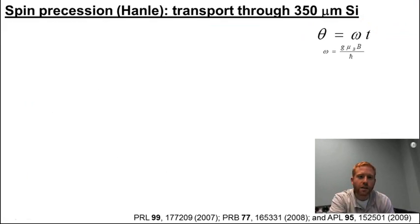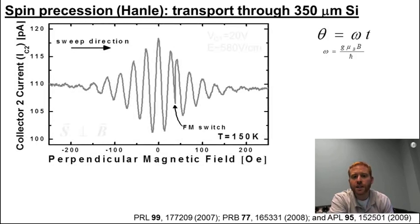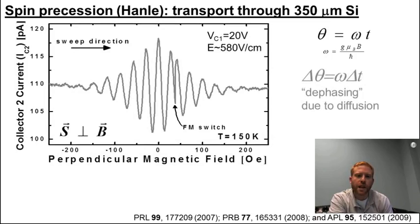In reality, not all electrons have the same transit time due to random scattering processes. Therefore, an uncertainty in transit time gives rise to an uncertainty in precession angle. When the precession frequency grows in higher and higher magnetic field, the effects of partial cancellation can be seen and the oscillations diminish.